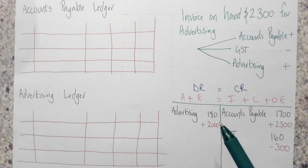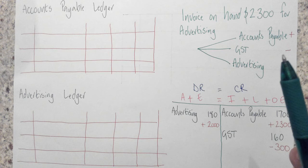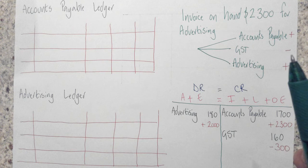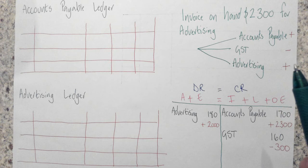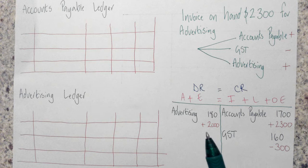We can see that we had an invoice on hand — a bill sent to us for $2,300 for advertising, and our accounts payable went up because we've got to pay that full amount. We've got to pay $2,300 for accounts payable as the amount due, and we can claim that cash back from the government, so we negatively changed the GST and we booked the advertising. So in the trial balance: accounts payable went up by $2,300, GST went down by $300, and advertising increased by $2,000.